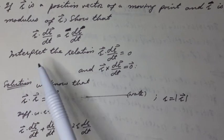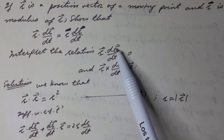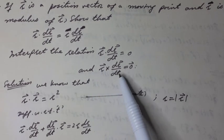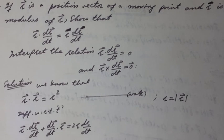Note it. Interpret the relation R vector dot dR vector over dt is equal to 0 and R vector cross dR vector over dt is equal to 0 vector. Solution.